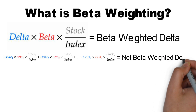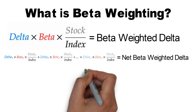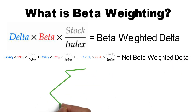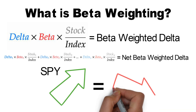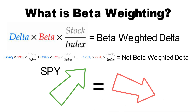But what does this actually tell you? The beta weighted delta of your portfolio tells you your total directional exposure to the overall market — in other words, how your entire portfolio's P&L is affected by price changes in the market. For a one dollar move in SPY, the P&L of all your positions should change by about the amount of this delta.